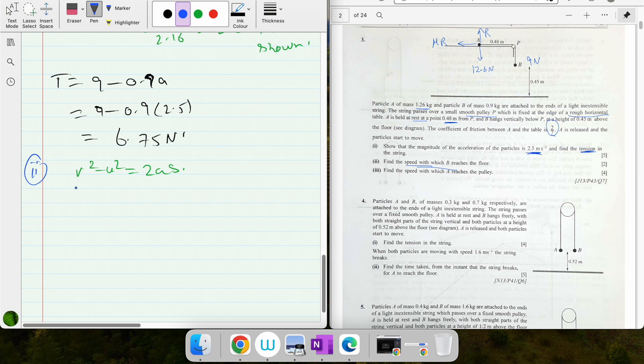So v² minus u² equals 2as is the only equation because time is missing. Speed with which B reaches is final velocity, initial velocity started at rest, 2 into acceleration is 2.5, and displacement from the question is a height of 0.45. So v² equals 2 times 2.5 times 0.45 is 2.25. Square root both sides and we get 1.5 meters per second.